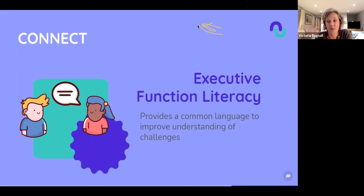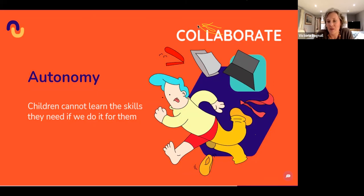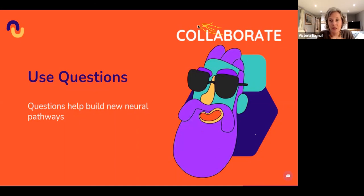Autonomy is also really important as part of the Collaborate stage. Children cannot learn these skills if we do everything for them — we must give them the opportunity to do that independently, which is hard when you want to keep a neurodiverse child safe. But we must put learning opportunities in their way and let them do things independently. Using questions is also key — questions forge new neural pathways and help people think independently. It's important to use questions rather than just giving directions in our parenting.